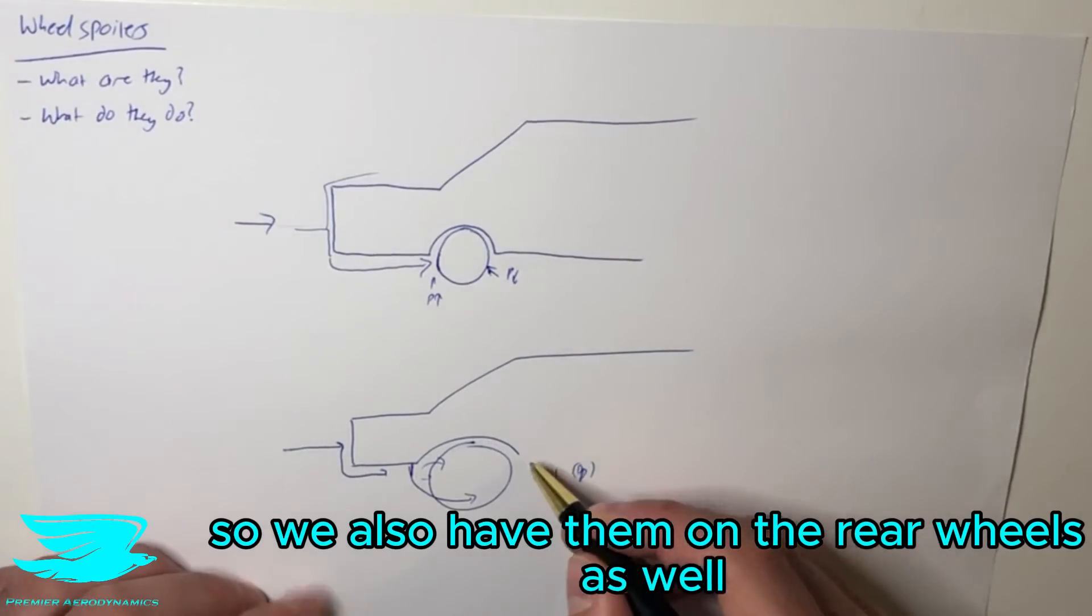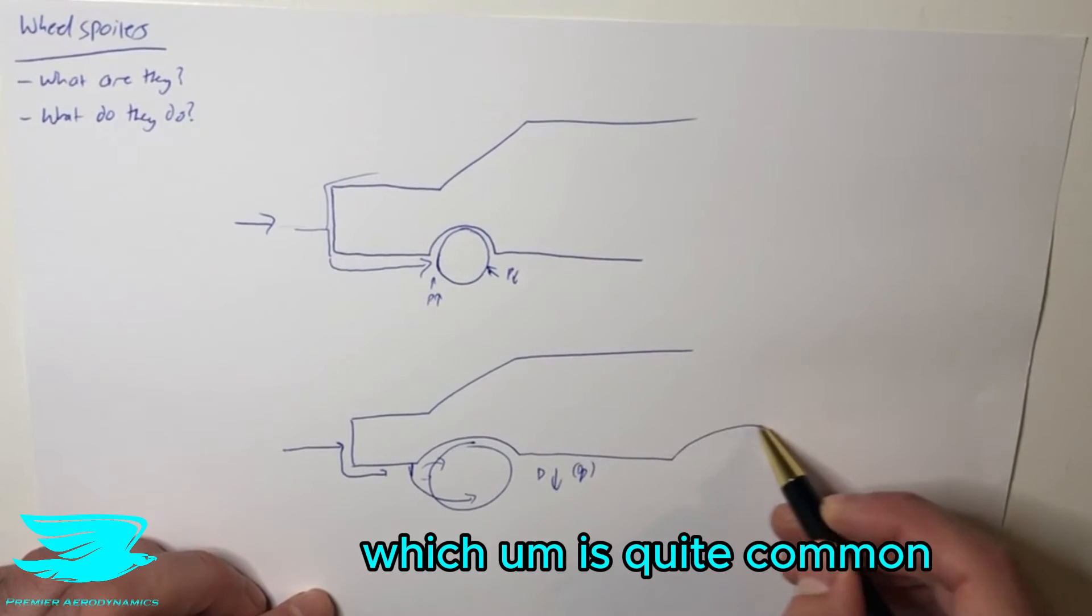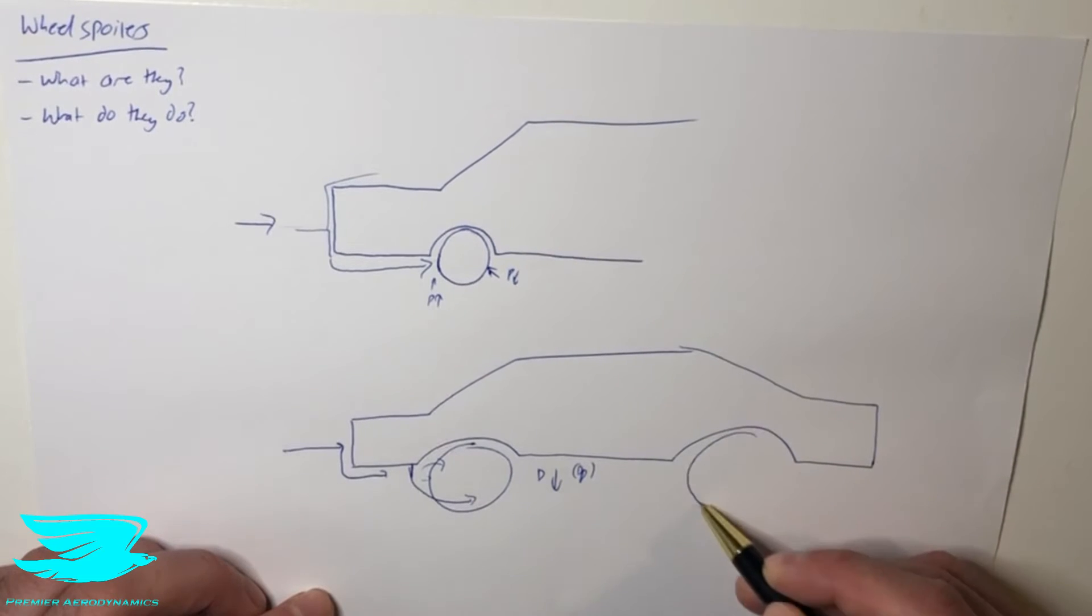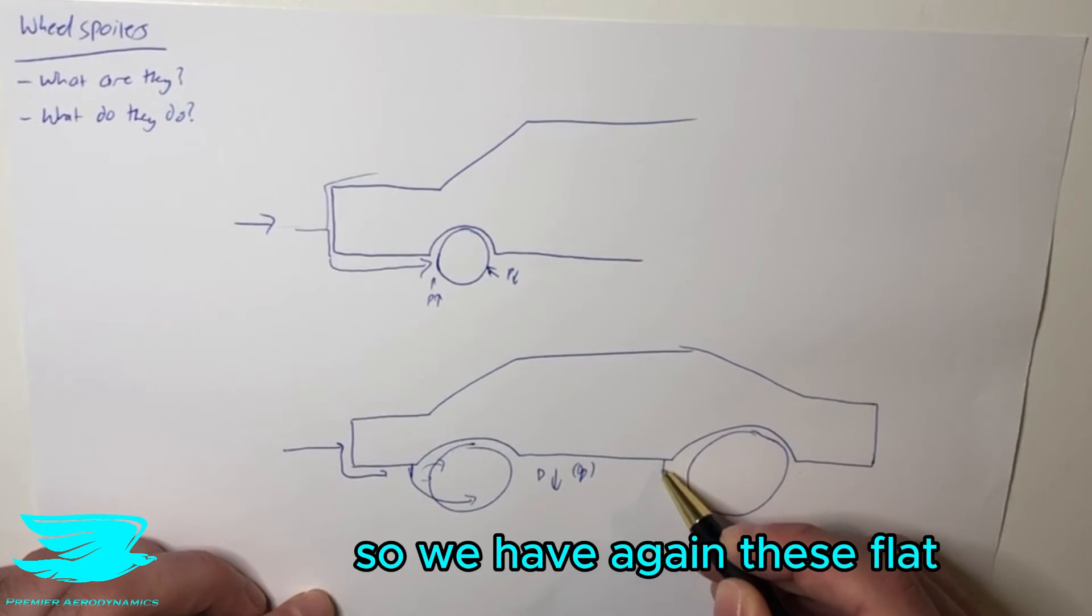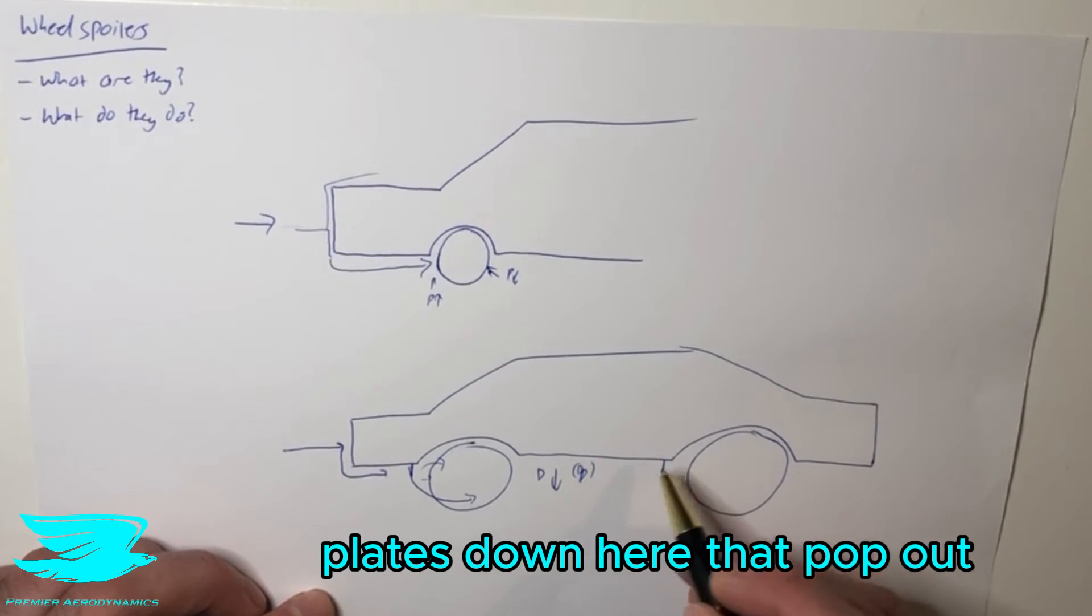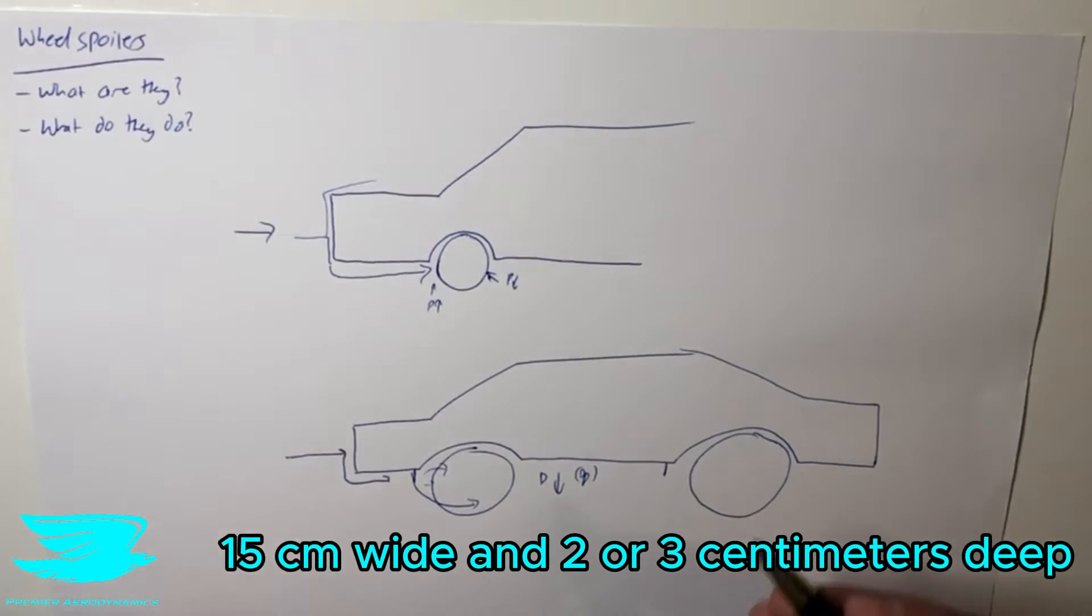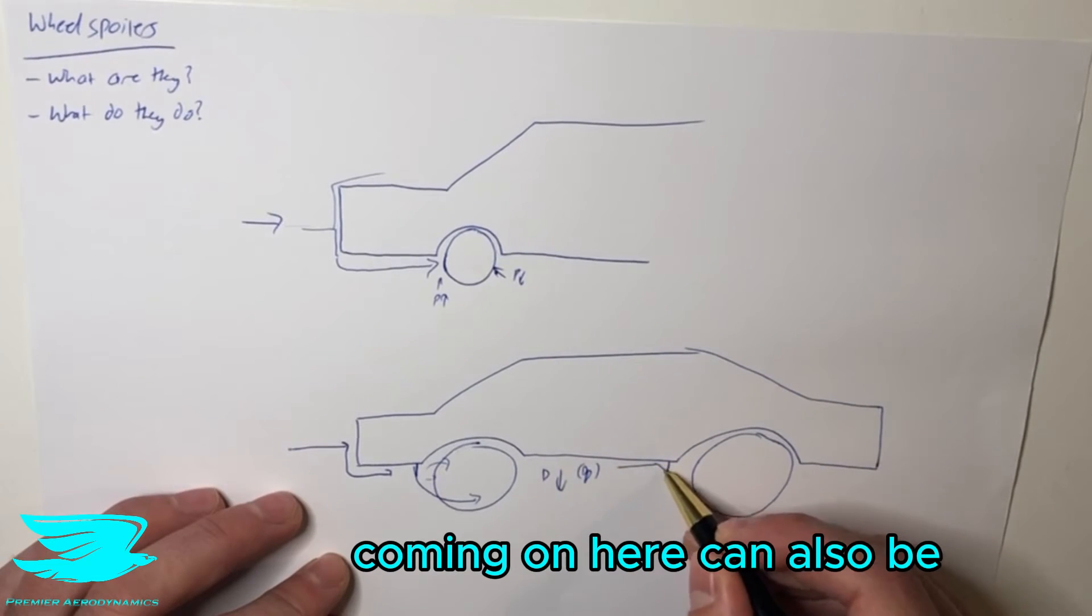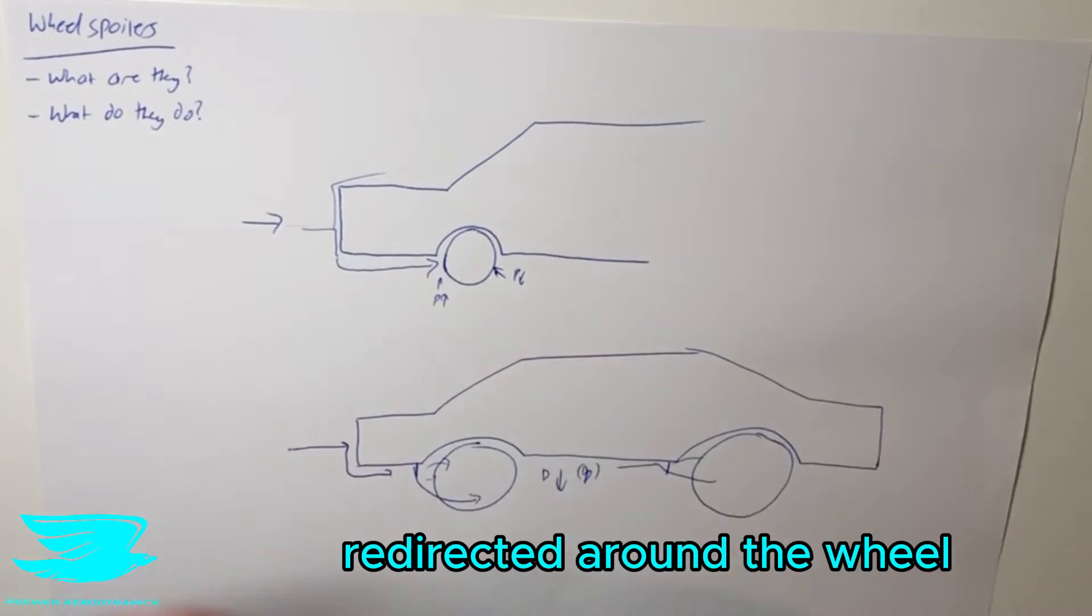We can also have them on the rear wheels, which is becoming a lot more common these days. We have these flat plates down here that pop out. Again, they're about 10 to 15 centimeters wide and 2 to 3 centimeters deep. Any flow coming along here can be redirected around the wheel.